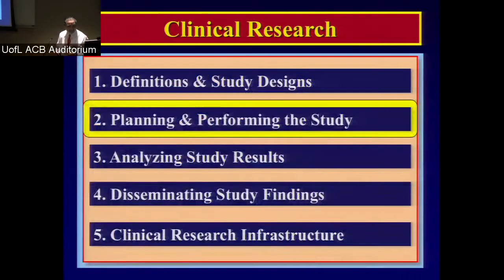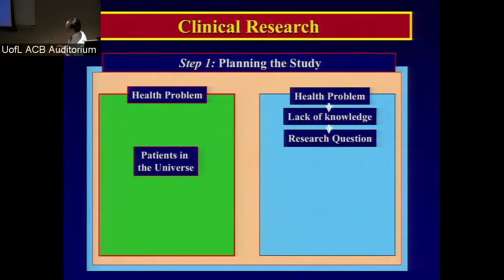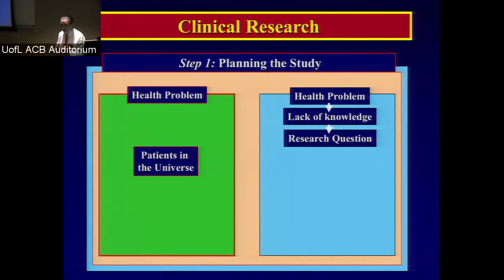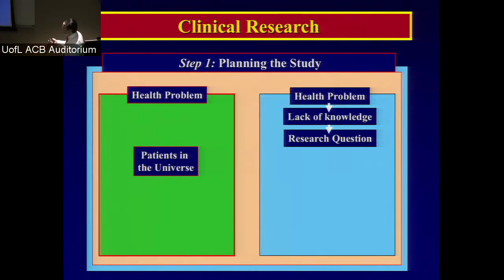Going into more detail on the planning and performing of a study: when you look at clinical research, you need to think about the patients in the universe — all patients globally that you want to improve practice for. This is the difference between clinical practice and clinical research. When we make rounds we improve the care of one patient at a time. When we're doing clinical research, the question applies to all patients in the universe. Whether you're dealing with diabetes, pneumonia, or renal disease, you are interested in a question that applies to everybody with that condition all over the world. You notice a lack of knowledge by reading the literature, and you come up with your research question.